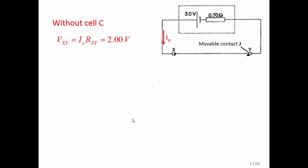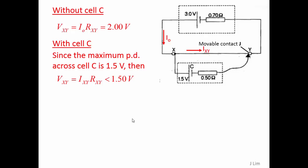Without cell C, potential difference across XY is 2 volts. With cell C, since the maximum potential difference across cell C is 1.5 volts, then the potential difference between X and Y must be less than 1.5 volts. This potential difference is given by the current through XY multiplied by the resistance between X and Y, and this must be less than 1.5 volts.